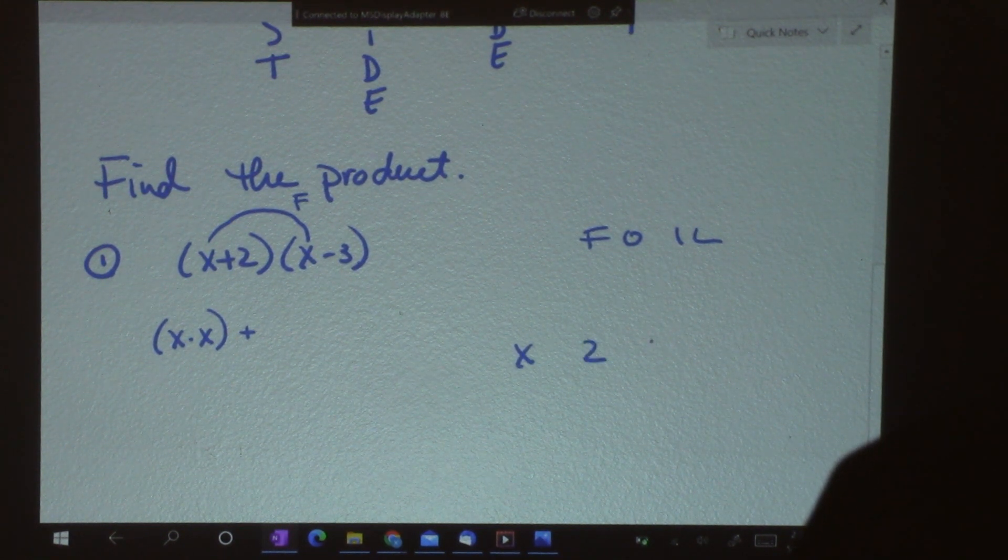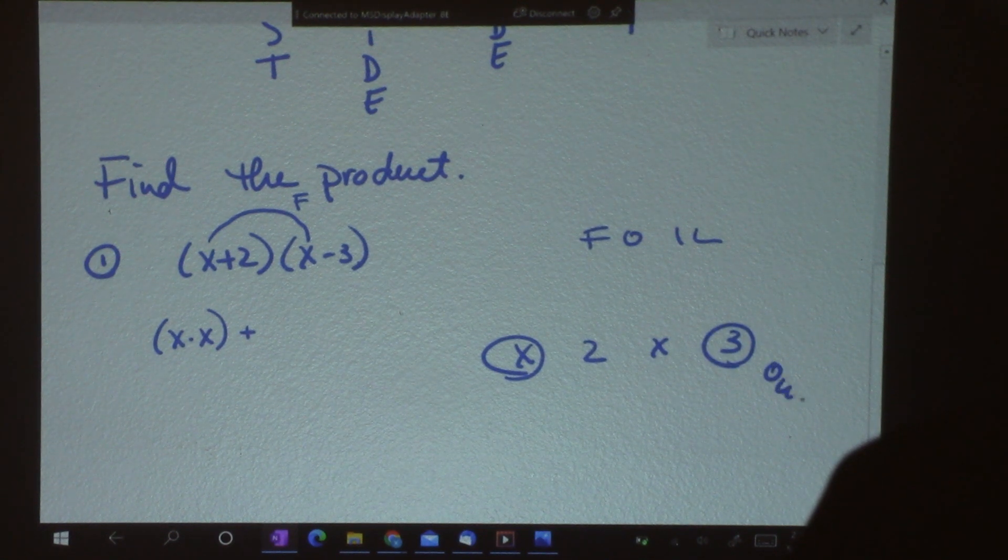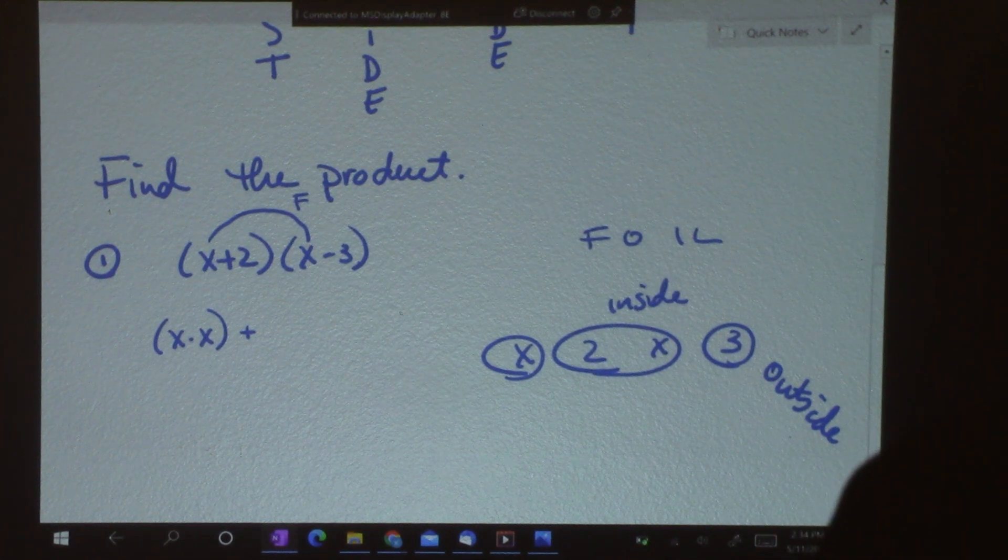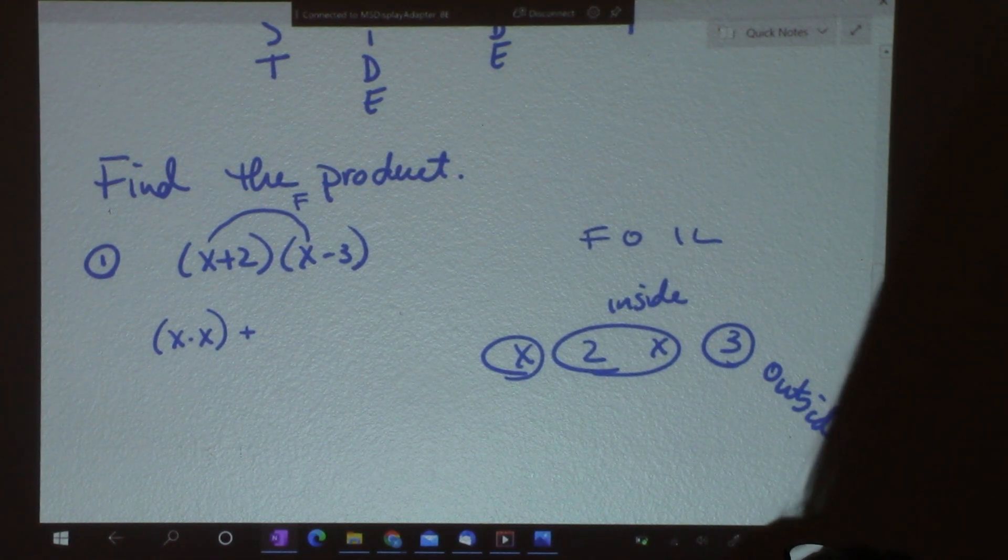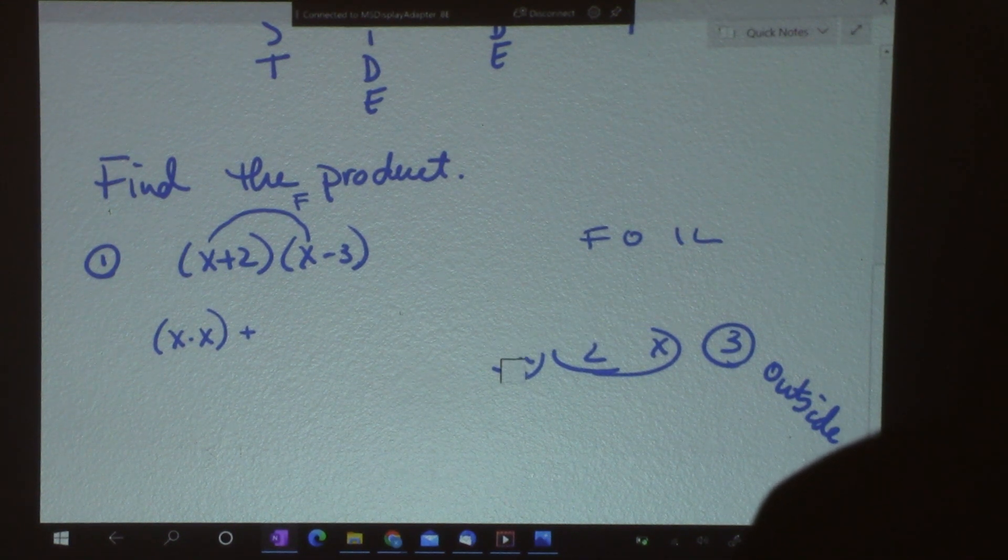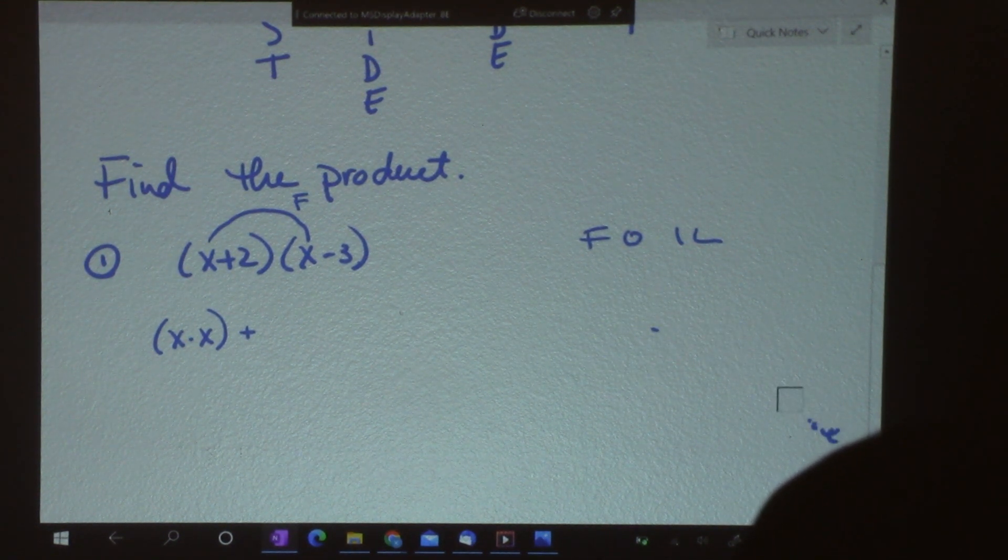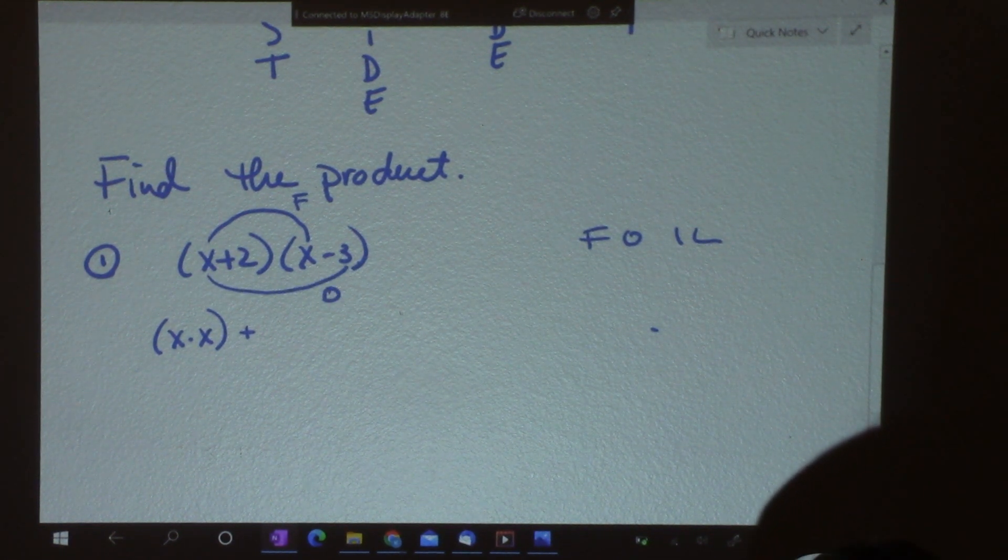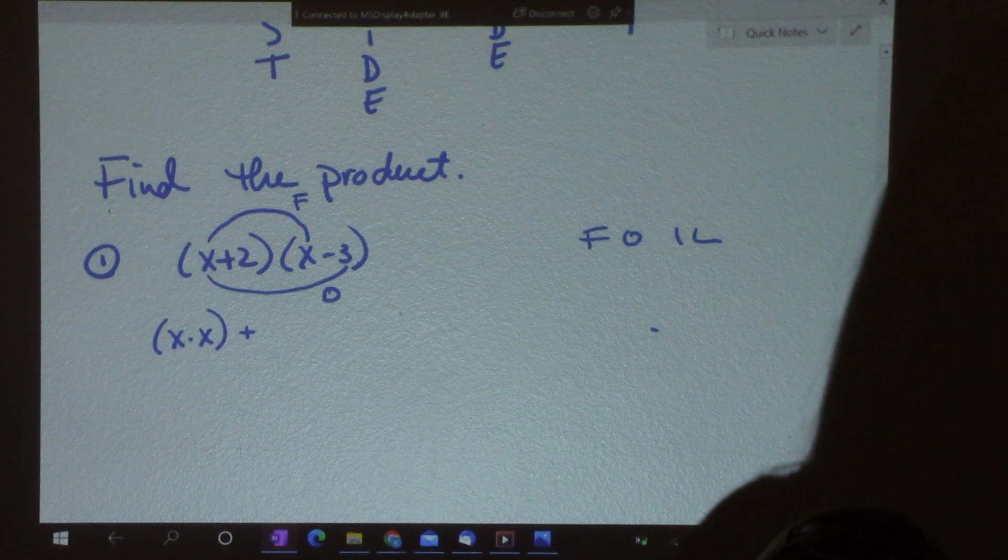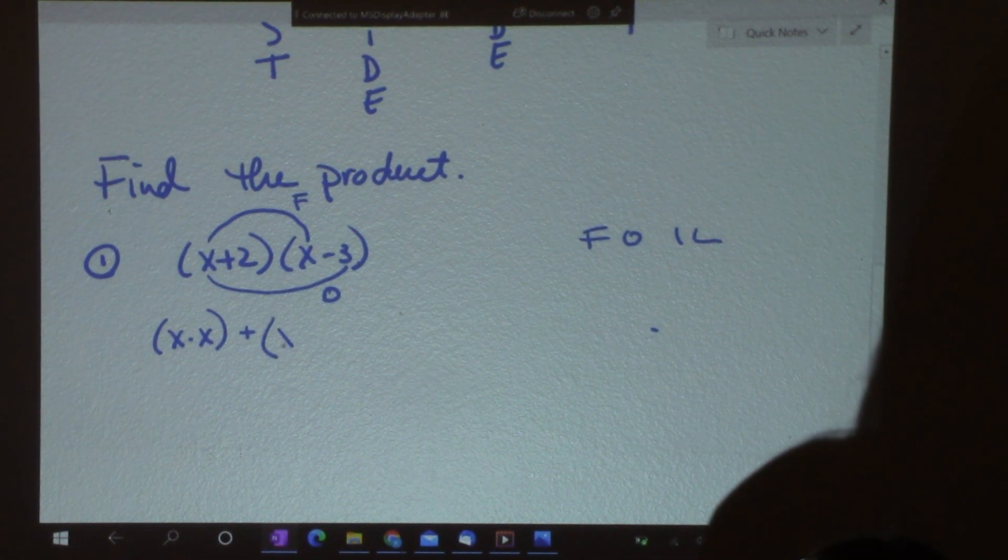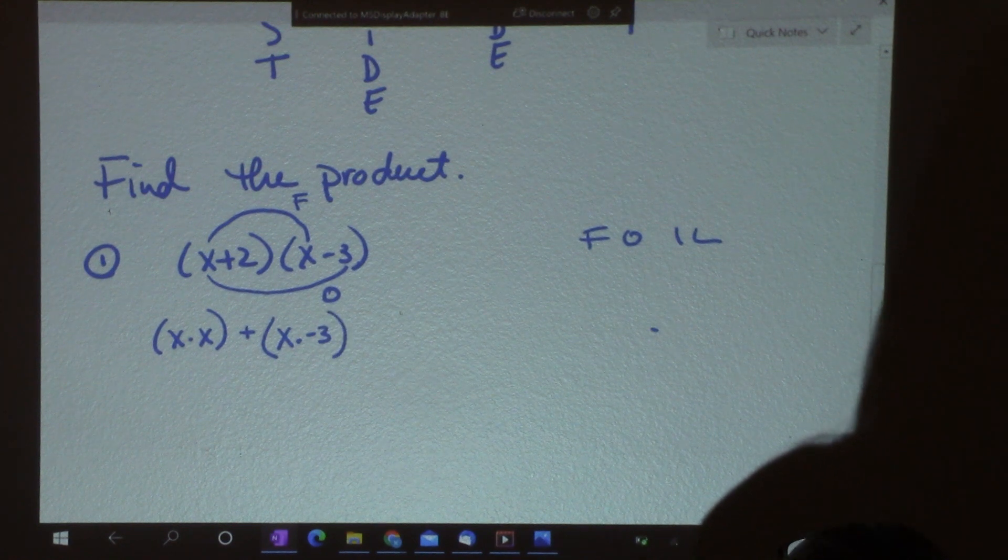So, if I wrote them like this, do you see that these two would be on the outside? And these two would be on the inside. So, my O here stands for outside. And so, I'm going to multiply the two terms that are on the outside of the four that I have. So, that would be x times negative 3.